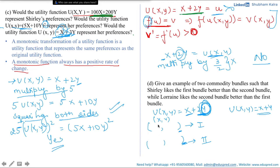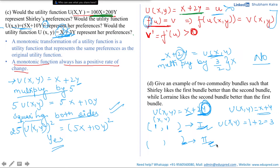There are two ways of doing it. As a first attempt, let's try keeping both bundles starting with (1,1). The utility Shirley gets from bundle (1,1) is x plus 2y, which is 1 plus 2 times 1, equal to 3. Now we want Shirley to like the first bundle more, so the utility of the second bundle should be less than 3.